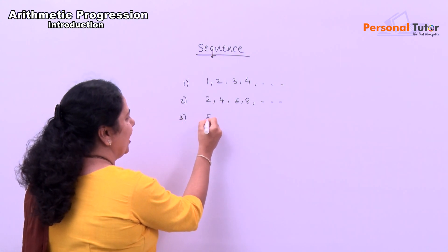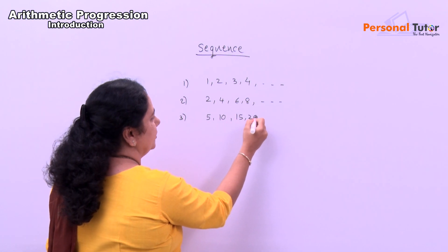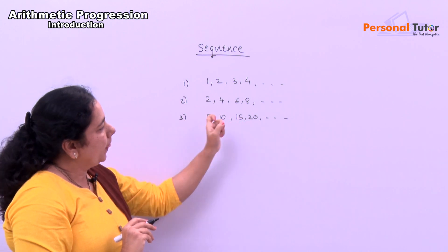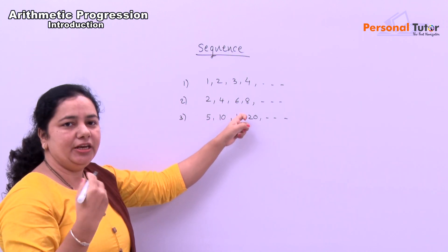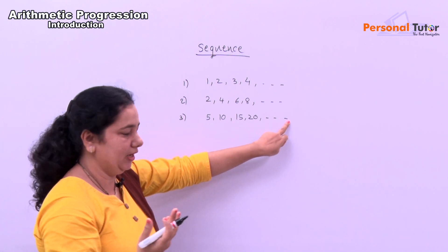Suppose number is 5, 10, 15, 20. What is next number? 5, 10, 15, 20. Then next number is 25, 30, 35 like this.